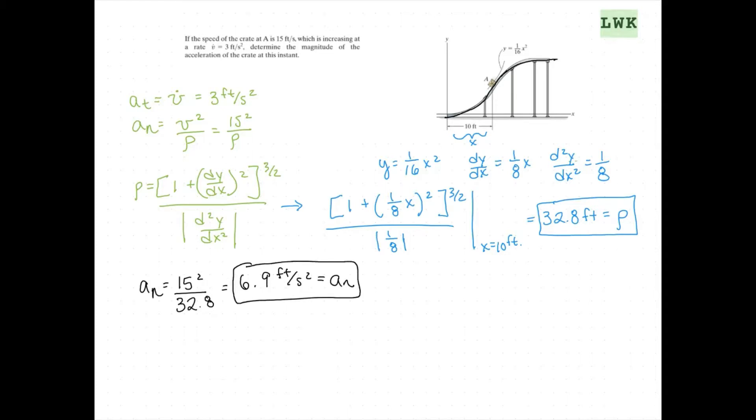And we already know from up here that A_t equals 3 feet per second squared, just given to us in the problem. And they want to know the magnitude of the acceleration. So now that we have both components of A,